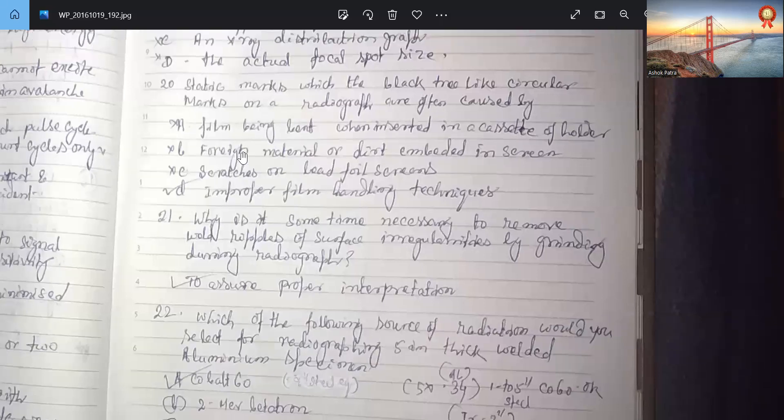So static marks which block with a black tree-like circular marks on radiograph are often caused by improper film handling techniques. That is just static marks.